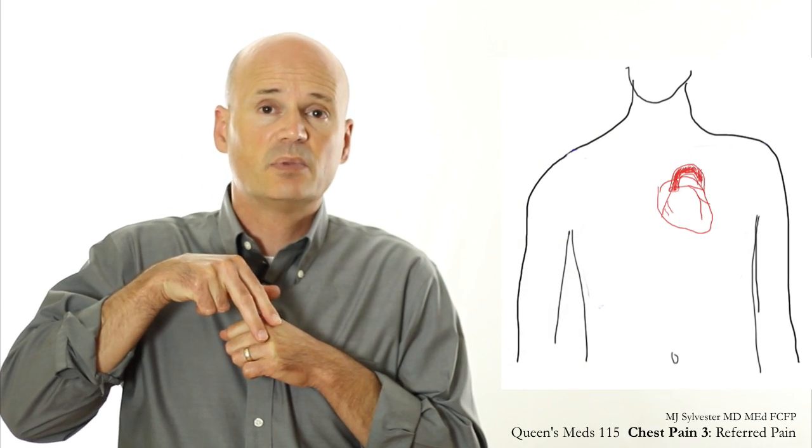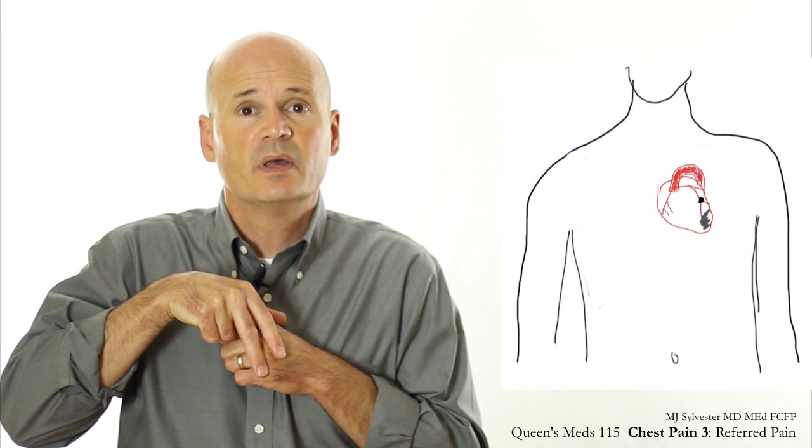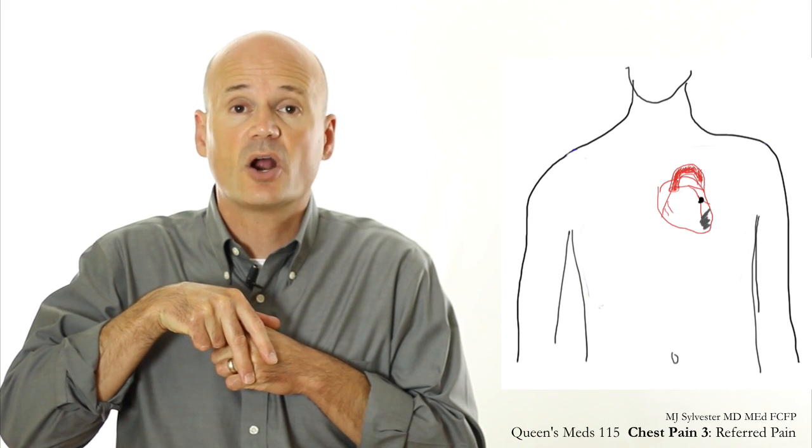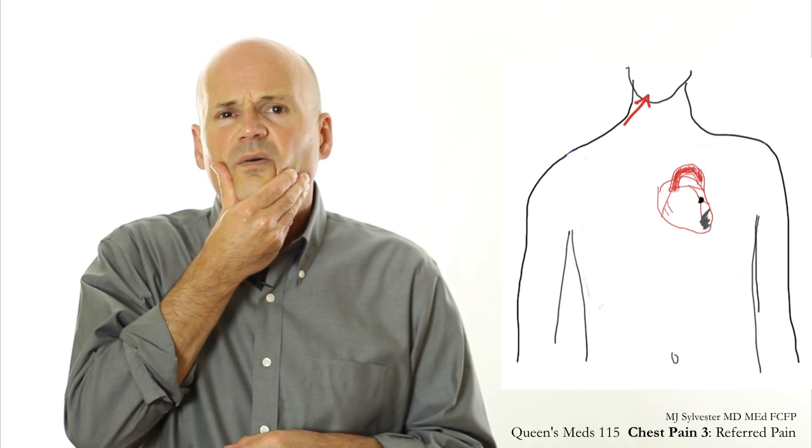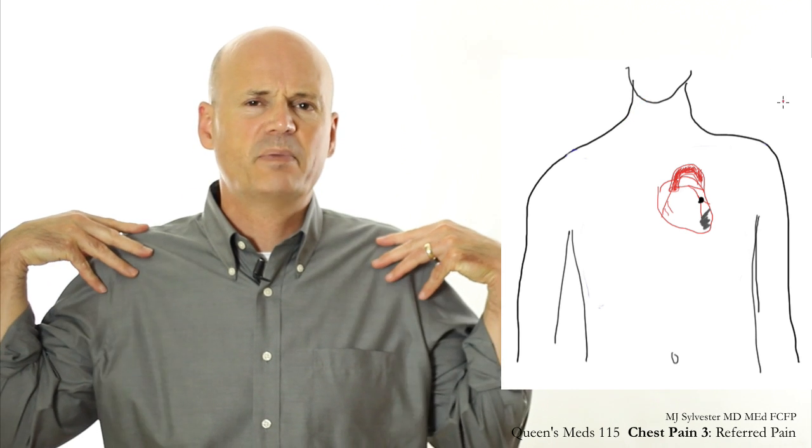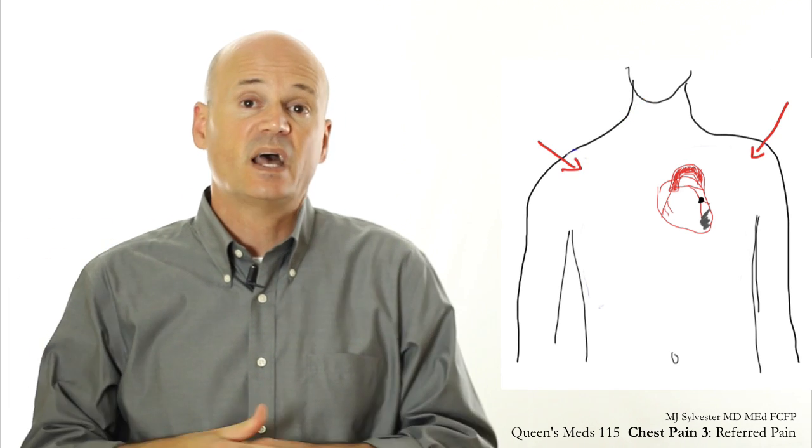For example, when your coronary arteries are plugged and the oxygenated blood can't make it downstream to feed your heart muscle, we call that cardiac ischemia. Except sometimes it feels like tightness in your jaw, or it feels like pain in your shoulders. That's referred pain.